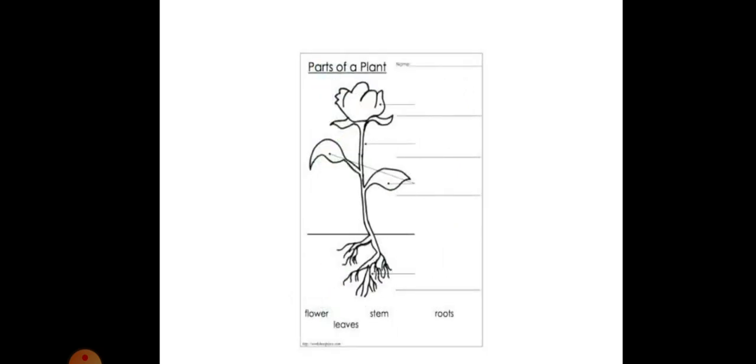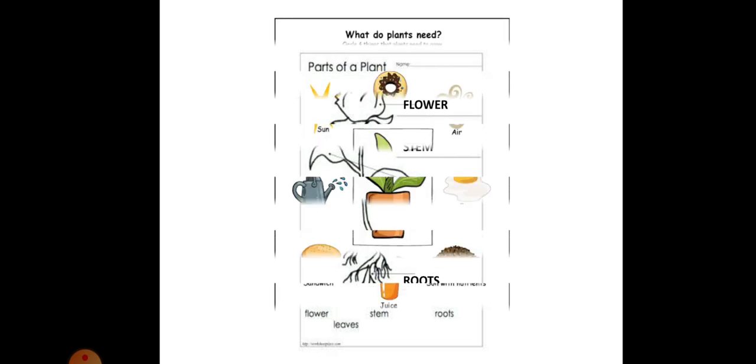Let us see the next one. Here you have got to write the parts of a plant. You know it very well by now. The flower, stem, leaf and the roots.